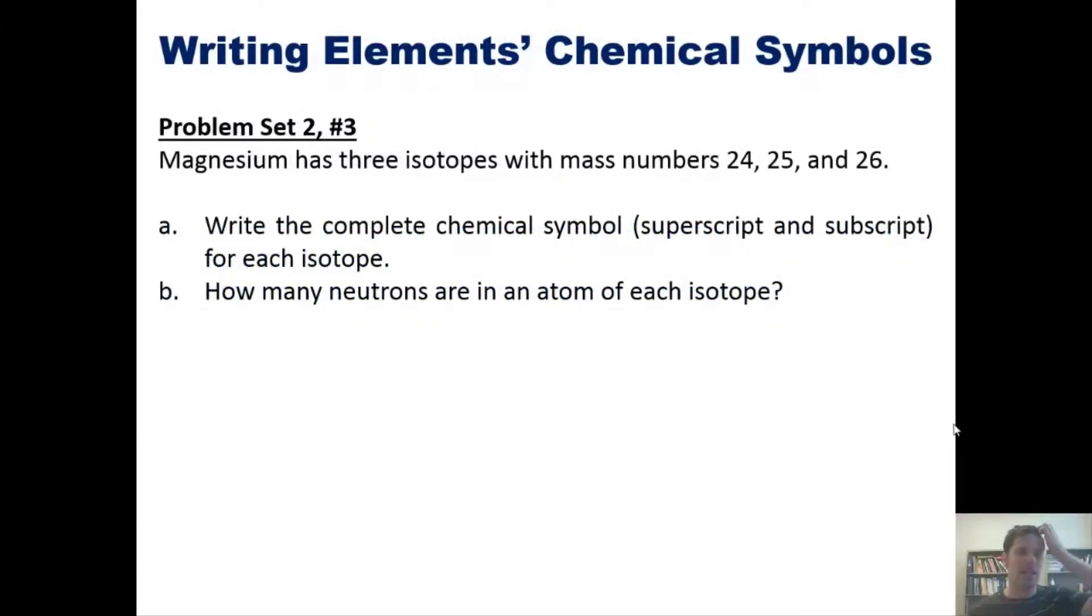First question: magnesium has 3 isotopes with mass numbers of 24, 25, and 26. Write the complete chemical symbol with superscript and subscript for each of these isotopes. Then answer how many neutrons are there in each atom of these isotopes?